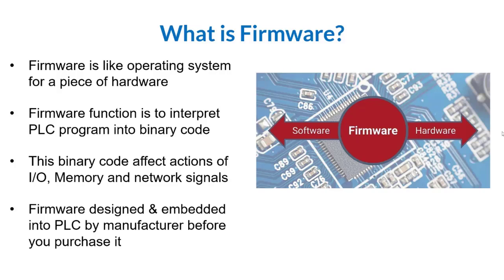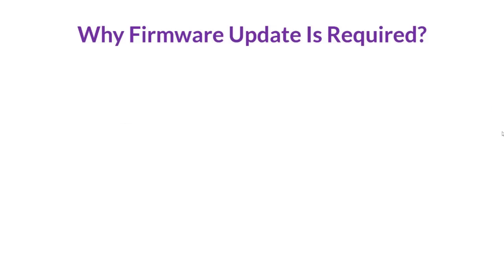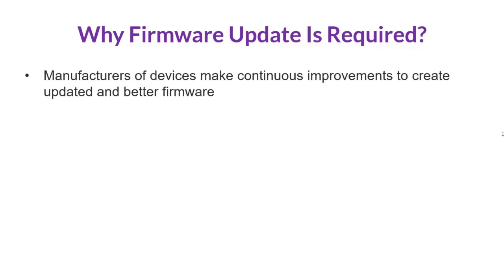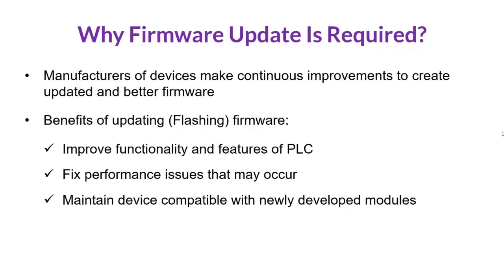The firmware is designed, installed, and embedded into the PLC by the manufacturer before you purchase it. So why do we sometimes need to update the firmware? Manufacturers try to make continuous improvements to create updated and better versions of firmware. This process is also commonly known as 'flashing the firmware.' By updating the firmware, we improve functionality and features of the PLC and fix performance issues that may occur during implementation or programming.